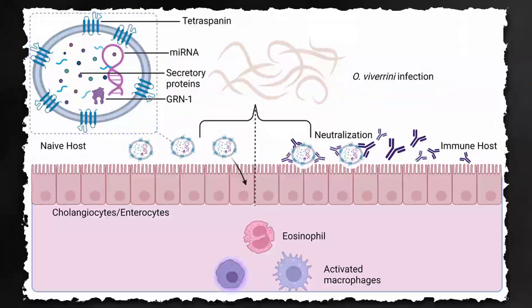Vaccination research for Clonorchis sinensis and Opisthorchis vivarini is still in early stages, but promising candidates are under investigation with a focus on antigens related to excretion, secretion, and tegument proteins by the parasites. And that's it for Clonorchis and Opisthorchis. Thanks for watching!